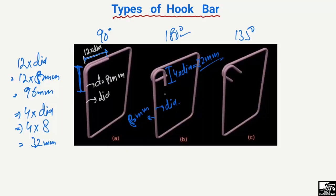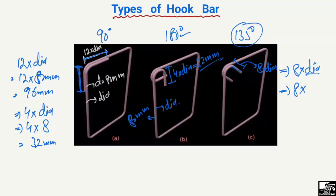Similarly, for the 135 degree hook, this bending length is equal to 8 times the diameter (8d). So 8 times the diameter of the bar — if the diameter is again 8 mm, then 8 × 8 = 64 mm. The bending length of this portion will be equal to 64 mm.